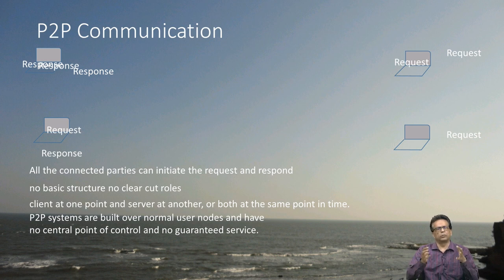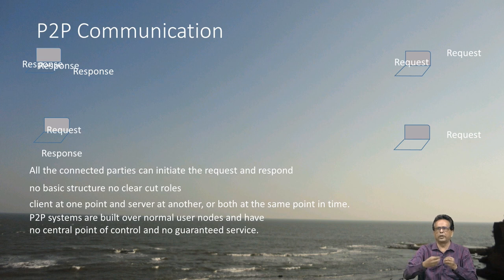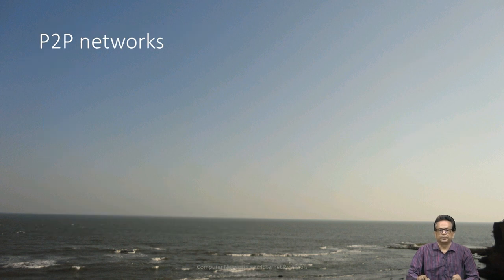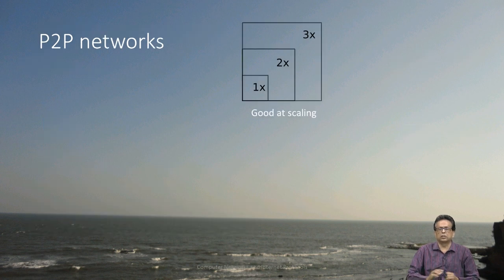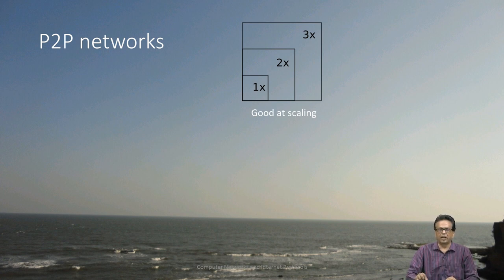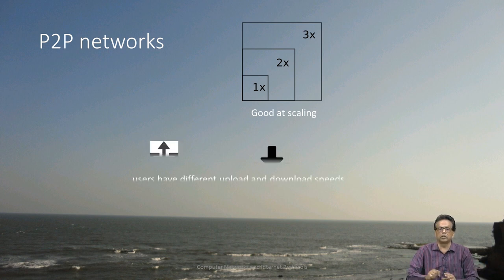When you use P2P, normal user nodes are acting — you are acting as a client at one point in time and as a server at another point in time, or both simultaneously. P2P networks are very good at scaling because you do not need a dedicated server. A server always has a limitation as the network grows due to capacity constraints. Unlike that, in P2P there are very distributed models, so it is very good at scaling.